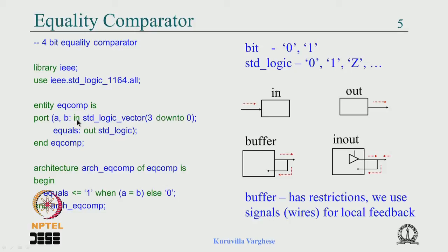We have looked at the various port directions: in, out, buffer, and inout. Standard_logic_vector is a repetition of standard_logic — a 4-bit standard_logic is a standard_logic_vector. You can write '3 downto 0' or '0 to 3'. There is a difference: when you write '3 downto 0', the most significant bit is 3 and the least significant bit is 0. When you write '0 to 3', the most significant bit is 0 — whatever comes on the left-hand side is the MSB and whatever is on the right is the LSB.